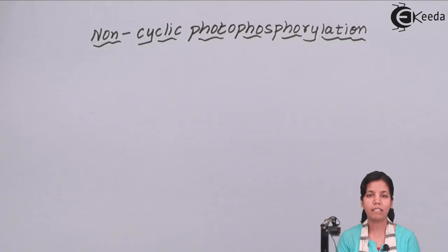Both the reaction centers, that is P700 of pigment system 1 and P680 of pigment system 2, both take part in non-cyclic photophosphorylation.